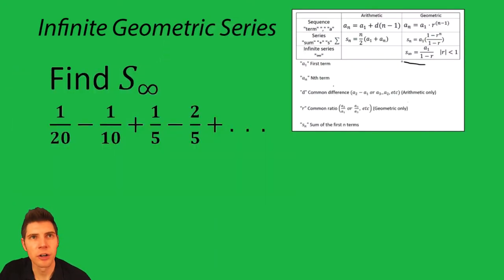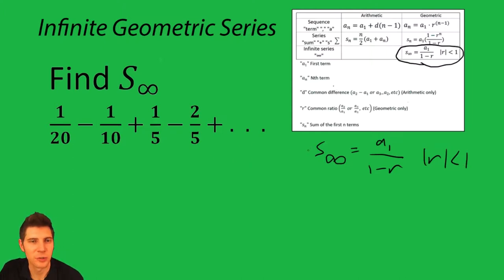So these are the notes for all sequences and series. We're interested in the infinite geometric, so this stuff right here. S infinity equals a sub one over one minus r, and it puts a qualifier that the absolute value of r must be less than one.